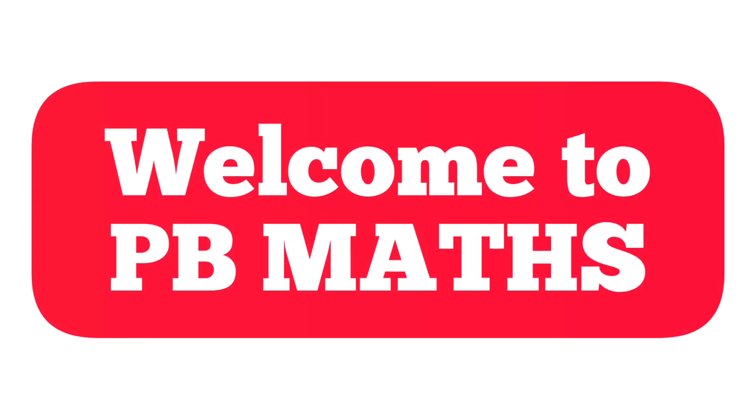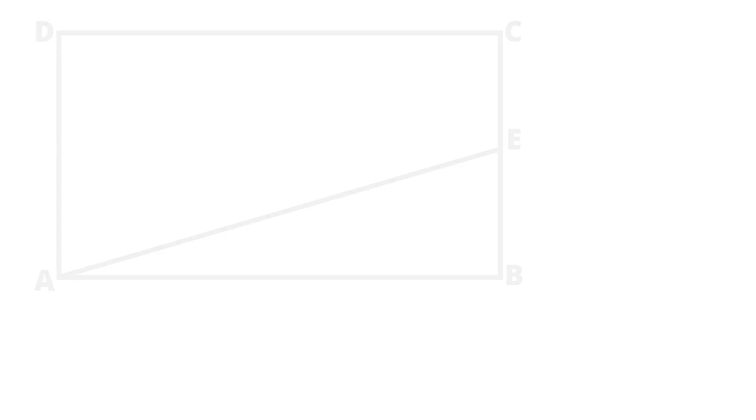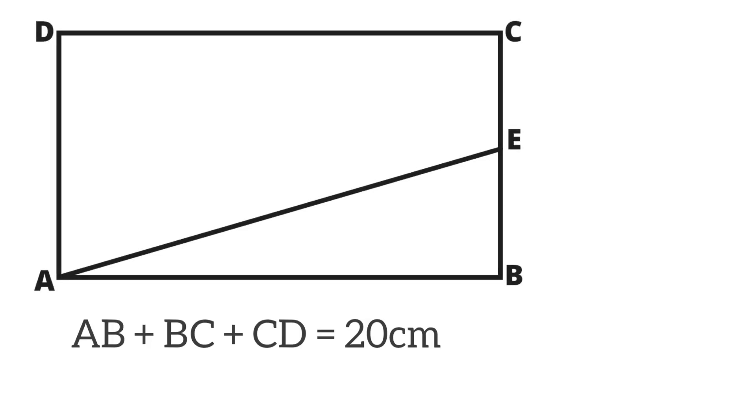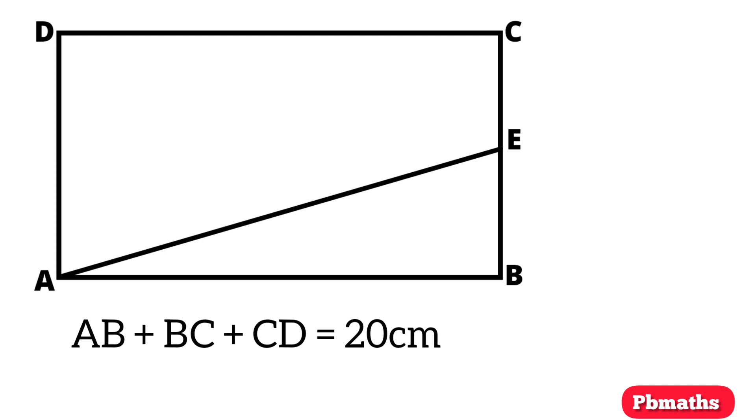Hello everyone, welcome to pbmaths. In rectangle ABCD, it is given that AB plus BC plus CD equals 20 cm and AE equals 9 cm, where E is the midpoint of side BC. What is the area of rectangle ABCD?